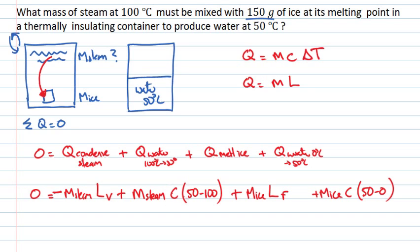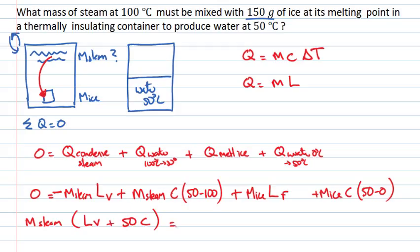So I have two negative terms and two positive terms that must all sum to zero. Taking the two steam terms to the left-hand side (they become positive), and factorizing out the mass of steam gives: mass of steam times (latent heat of vaporization plus 50 times specific heat of water). This equals the mass of ice times (latent heat of fusion plus 50 times specific heat of water).